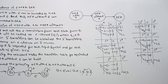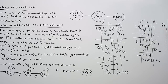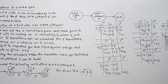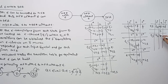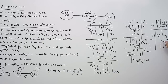Now for state Q2: Epsilon closure of Q2 is Q2 itself. On Q2 seeing symbol A, there is no transition — Phi. On Q2 seeing symbol B, there is no transition — Phi. On Q2 seeing symbol C, we go to Q2, and the Epsilon closure of Q2 is again Q2. So from Q2 on C, we go to {Q2}.